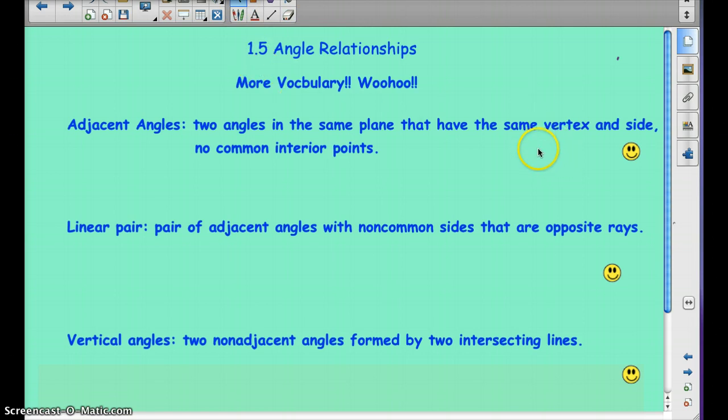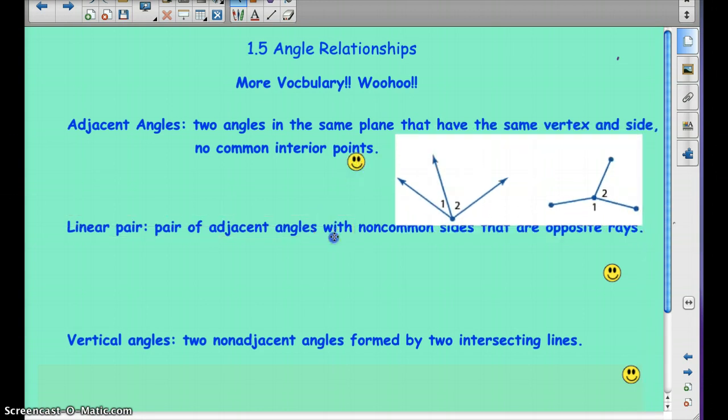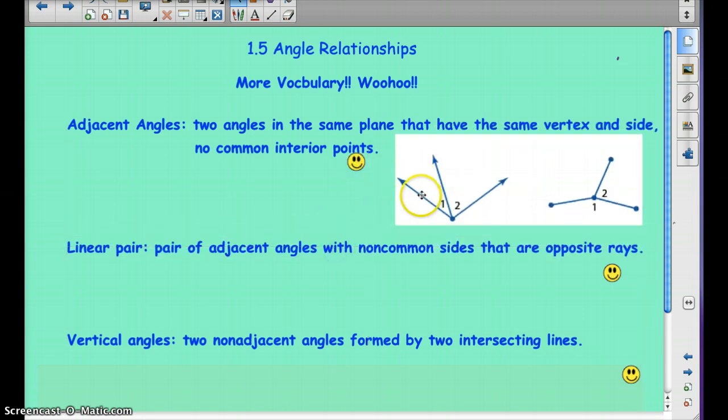So adjacent angles, two angles in the same plane that have the same vertex and side, and no common interior points. So here's what some adjacent angles look like. So they have the same vertex and the same side. Again, pause the video whenever you need to, to write these down and draw these visuals.